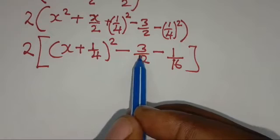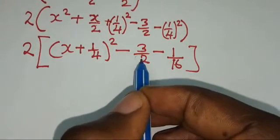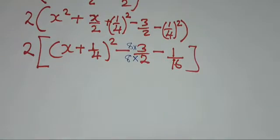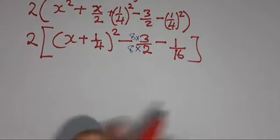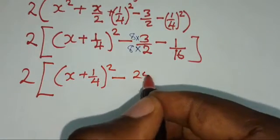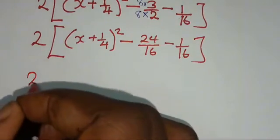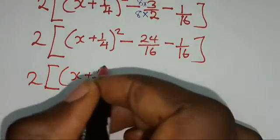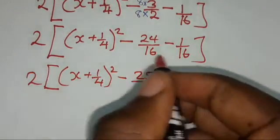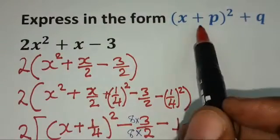Again, what is needed is just to simplify or subtract these fractions. The common denominator is 16. So we need to make the first denominator also 16 by multiplying it by 8. What you've done on the denominator, you also do it on the numerator so that the value of the fraction remains the same. So we'll have 2 times x plus 1 over 4 squared, minus 8 times 3 is 24 over 16, minus 1 over 16. So we're going to have 2 times x plus 1 over 4 squared. Then negative 24 minus 1 is negative 25 over 16. So you can see that we have written this expression in this form.